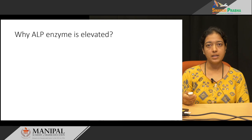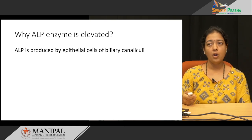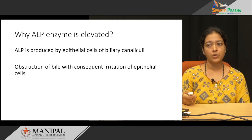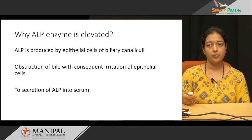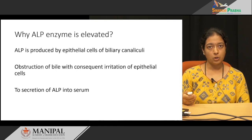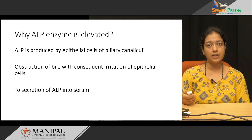The enzyme elevated in post-hepatic jaundice is ALP — alkaline phosphatase. ALP is produced by the epithelial cells of biliary canaliculi. Whenever there is obstruction of bile, there is continuous irritation to the epithelial cells. Because of this continuous irritation, the ALP enzyme is secreted and its levels are increased in the blood.